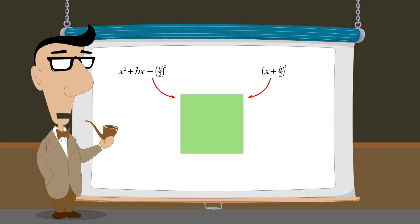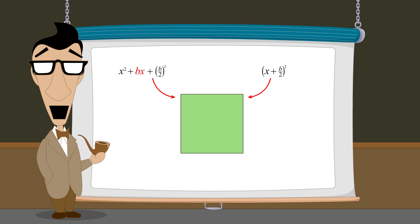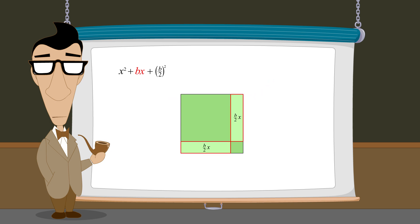However, this geometric proof assumes that the bx term has a positive value, and so in the diagram, the area of the two rectangles that together represent bx are added to the other areas rather than subtracted. So what would this proof look like if the value of bx is negative?